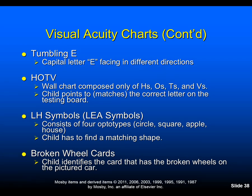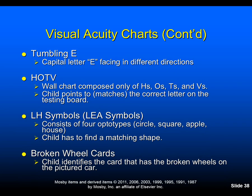The broken wheel test consists of six pairs of cards with acuities of 20/100, 20/80, 20/60, 20/40, 20/30, and 20/20. In each pair, one card has solid wheels and the other has Landolt C or broken wheels; the child identifies the card with the broken wheels on the pictured car. Record the acuity of the card with the smallest car for which the child can distinguish the broken wheels. For specific examples of these instruments, visit the Evolve website.